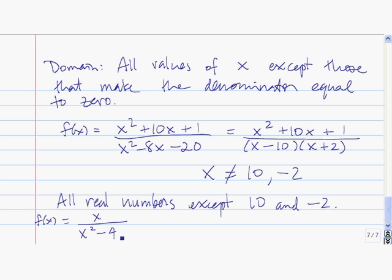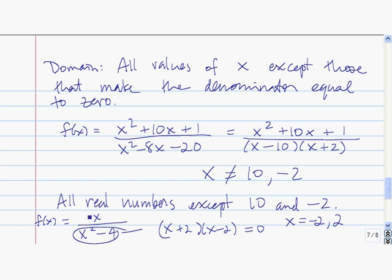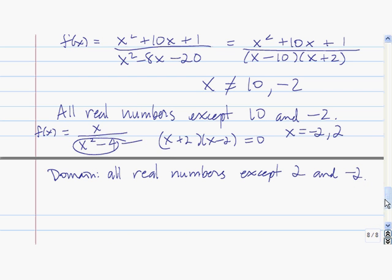Try this one. You should have gotten all real numbers except 2 and negative 2, because the denominator factors as x plus 2 times x minus 2. That product equals 0 if x equals negative 2 or 2. So the domain is all real numbers except 2 and negative 2. If we want, we can use set notation: the set of all x such that x is a real number and x is not equal to 2 or negative 2.